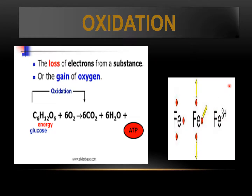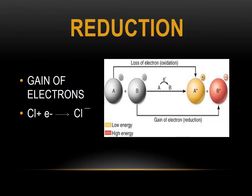This electron will be lost and it will be oxidized. Next is reduction. Reduction means the opposite of oxidation — in oxidation there is a loss of electron, and in reduction there is a gain of electron. For example, chlorine gains an electron to produce chloride ion. In the reaction A plus B gives A-positive and B-negative: A loses an electron (that is oxidation) and B gains an electron (that is reduction).